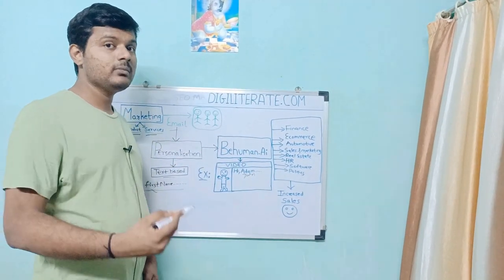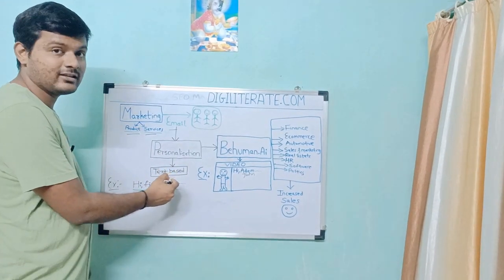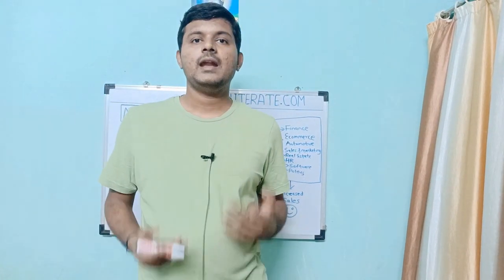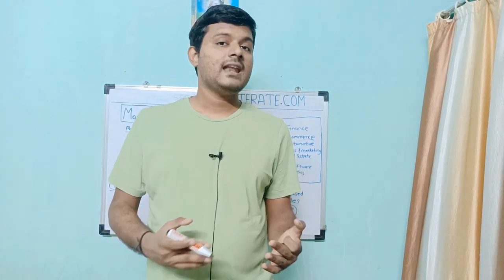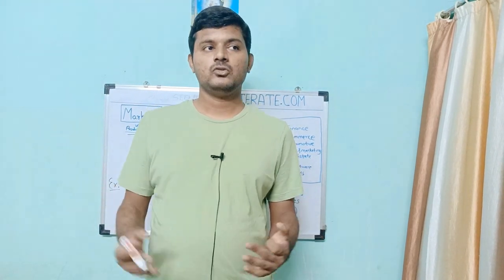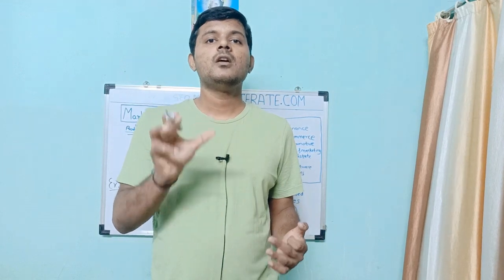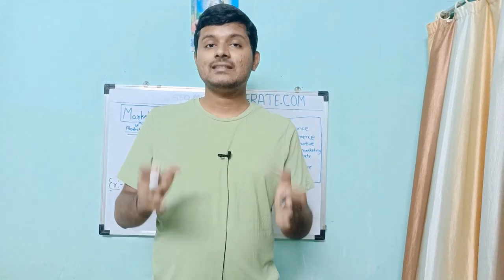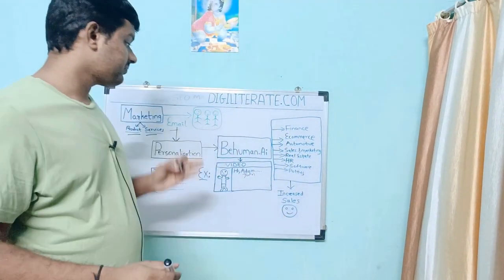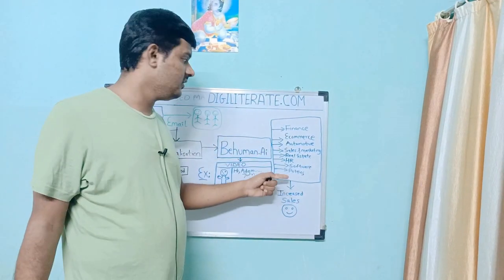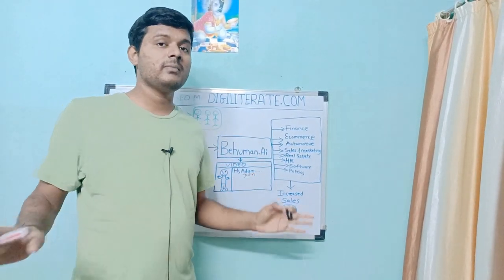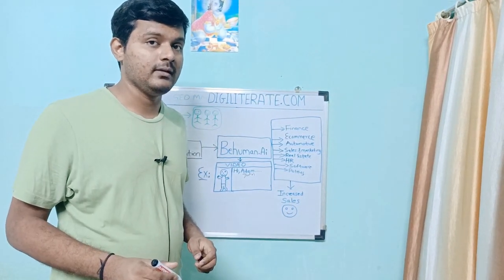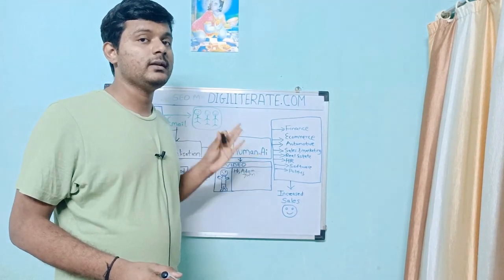Now I'm going to introduce you to BeHuman.ai. BeHuman.ai helps you go beyond just text-based personalization — you can use the same approach in your videos. Suppose I'm making a video saying 'Hi first name,' and that first name variable gets replaced with all the names on your list. This helps you personalize your videos at scale. BeHuman is available for finance, e-commerce, sales, and marketing — it's useful for any industry's marketing campaign and will help increase your sales significantly.